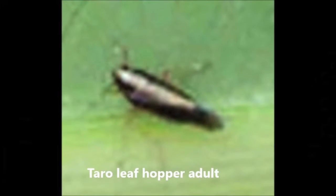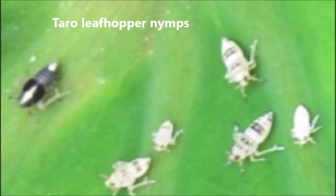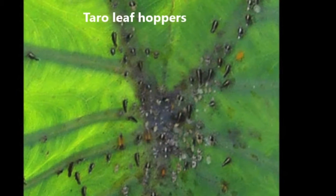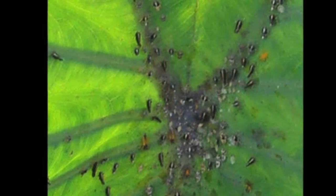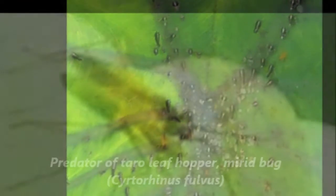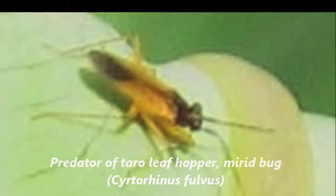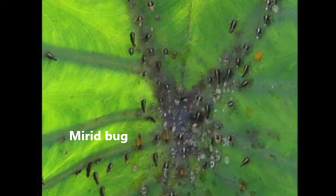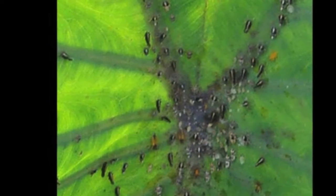Taro leafhopper is more common on taro during the dry summer. They suck the sap out of taro leaves and cause reddish patches on the leaves. Since taro leafhopper only feeds on taro, it is difficult to use insectary plants to manage this pest. One predator of taro leafhopper, Mirid bugs, was introduced to Hawaii and other Pacific islands and is commonly found in leafhopper-infested taro fields, as shown in this picture.